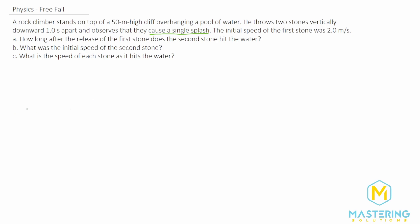Let's just draw it. We have a pool of water and a cliff that's 50 meters high, with the rock climber at the top. They throw one stone down and then a second stone — both hit the water at the exact same time. So for part A, essentially what they're saying is: how long is the first stone in the air? Since they hit at the same time, we're solving for how long the first stone was in the air.